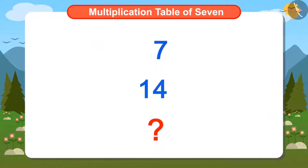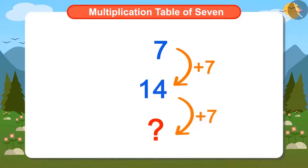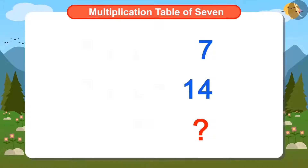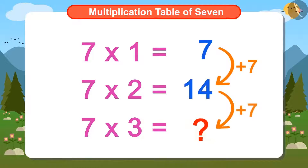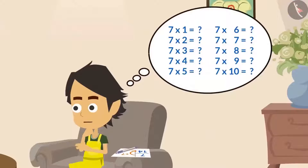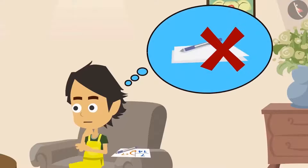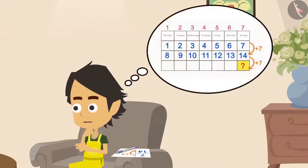Suddenly, Ayushman remembered that he had done such a calculation earlier too. Do you remember where we did this kind of calculation first? We have done this kind of calculation while learning multiplication tables. So, is this also a table? Yes! This is the multiplication table of 7. Its first number is 7. We added 7 to it and got the next number. By further adding 7 to it, we will find the subsequent number. I wish I could remember the table of 7 — I would have been able to tell next Sunday's date without the help of paper and pen.